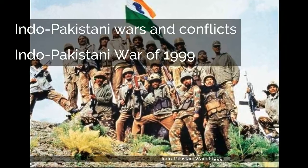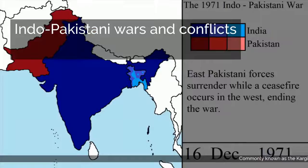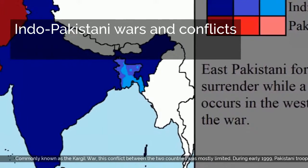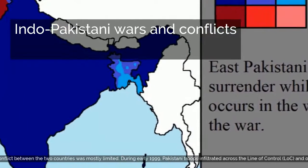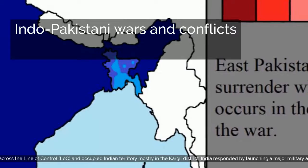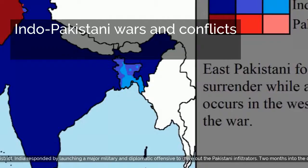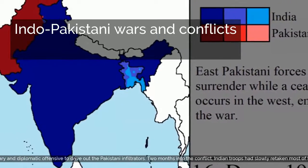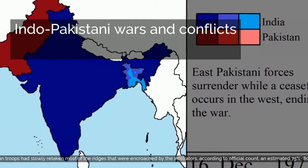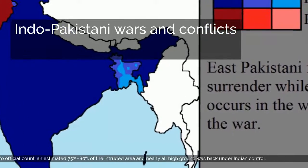Indo-Pakistani War of 1999, commonly known as the Kargil War. This conflict between the two countries was mostly limited. During early 1999, Pakistani troops infiltrated across the Line of Control and occupied Indian territory, mostly in the Kargil district. India responded by launching a major military and diplomatic offensive to drive out the Pakistani infiltrators. Two months into the conflict, Indian troops had slowly retaken most of the ridges that were encroached by the infiltrators. According to official count, an estimated 75% to 80% of the intruded area and nearly all high ground was back under Indian control.